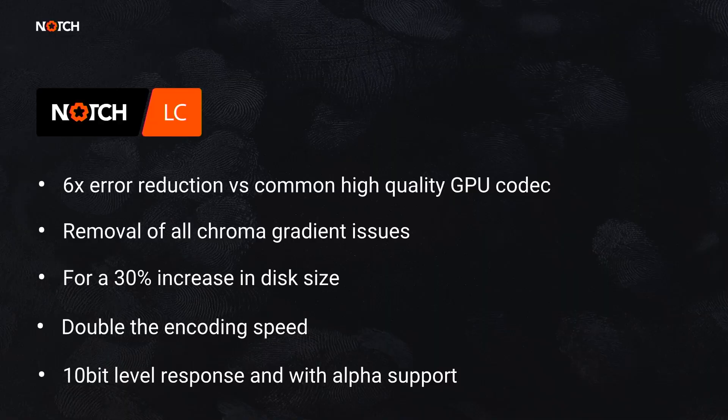Quick summary of what you're getting: six times the reduction in error against common high-quality GPU codecs, removal of all chroma gradient issues, for a cost of about 30% increase in disk size, double the encoding speed over something like HAP-Q, a 10-bit level response, and alpha support as well.